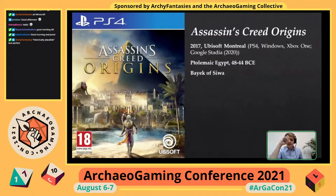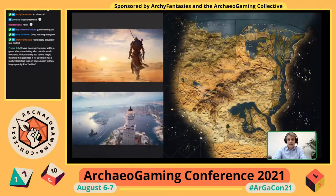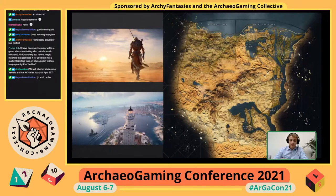Assassin's Creed Origins is the oldest of the games, released in 2017 by Ubisoft Montreal. Origins takes you to the final days of Ptolemaic Egypt, set from 48 to 44 BCE, and immerses you in historical events such as the siege of Alexandria or the assassination of Julius Caesar. As the Egyptian character Bayek, you visit the Egyptian desert, oases, the Nile, and meticulously detailed cities like Alexandria, Memphis, Cyrene, or Karanis. The game includes recreations of many historical sites and even background dialogue by NPCs in ancient Greek, Latin, and a reconstructed version of ancient Egyptian.